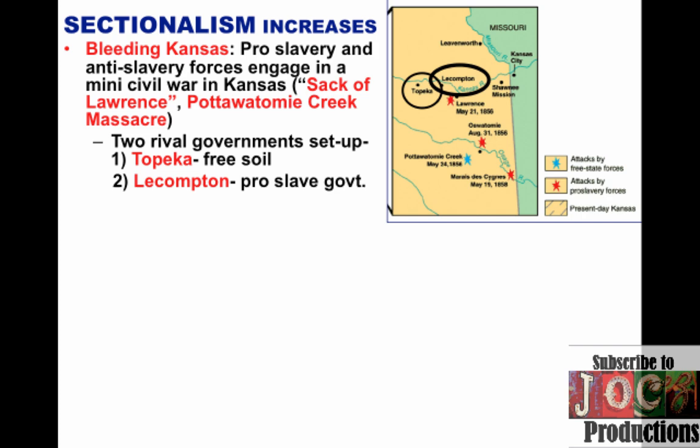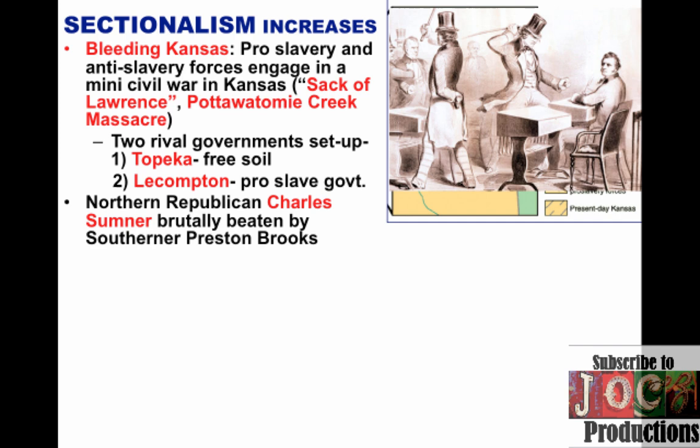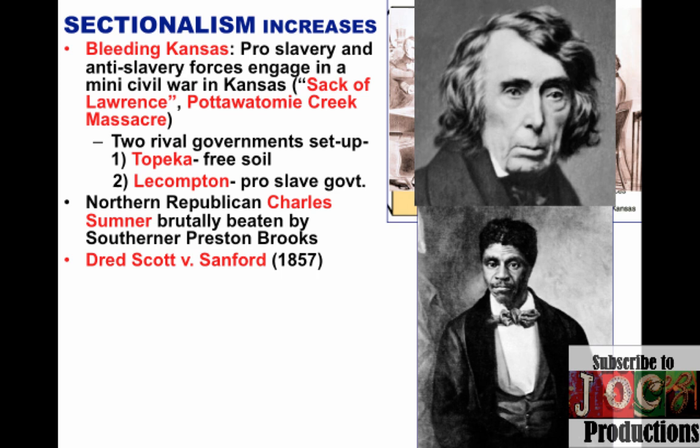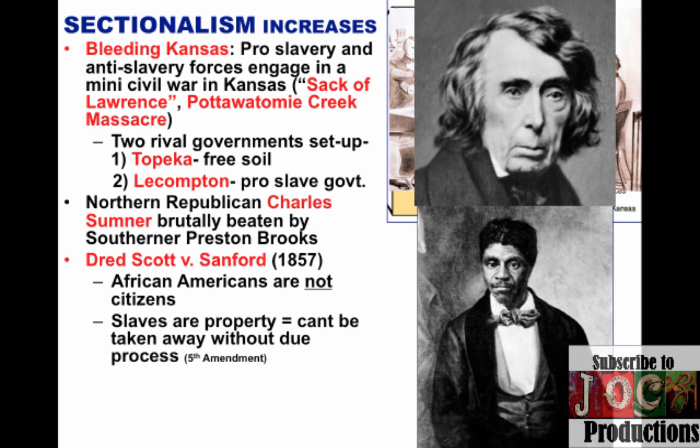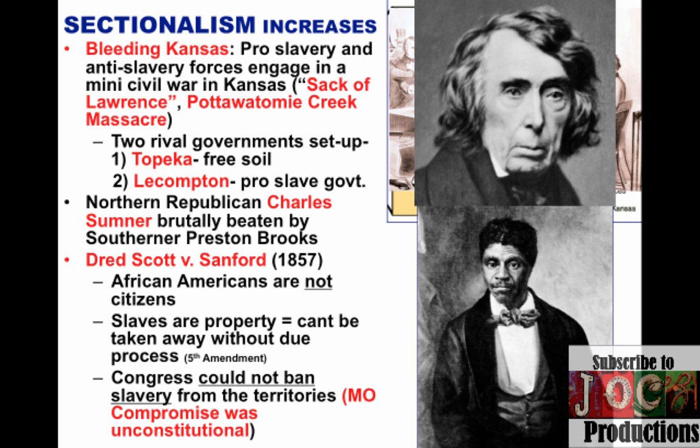Popular sovereignty was an utter failure. The violence of Kansas spread to the halls of Congress when Northern Republican Charles Sumner was brutally beaten by Southerner Preston Brooks. The big firestorm erupted again with Dred Scott v. Sanford, where in 1857 Roger Taney and the Supreme Court ruled: one, African Americans are not citizens; two, slaves are property, and therefore under the Fifth Amendment cannot be taken away without due process. Ultimately, the Dred Scott decision said Congress could not ban slavery from the territories — and therefore the Missouri Compromise was unconstitutional — meaning slavery potentially could be opened up anywhere in the nation, creating a huge outcry from the North.